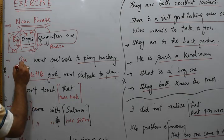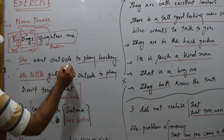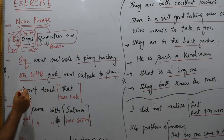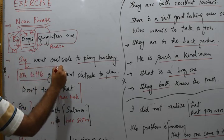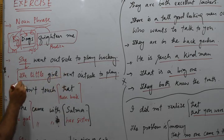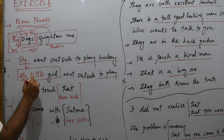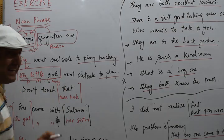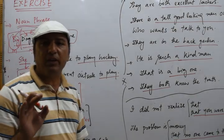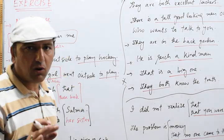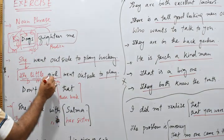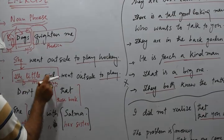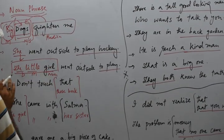Another sentence: 'She went outside to play hockey.' If we replace 'she' with a noun phrase like 'the little girl' — 'the' is determiner, 'little' is modifier, and 'girl' is the noun keyword. The keyword in a noun phrase would be a noun or pronoun. Combined, 'the little girl' is a noun phrase.